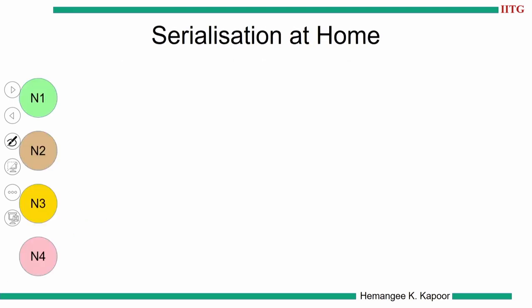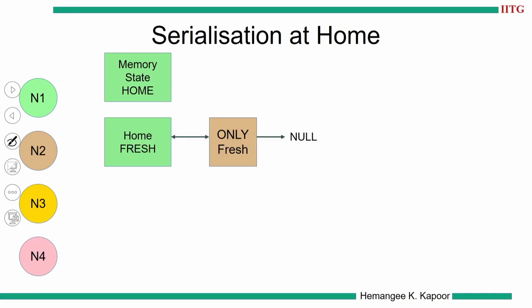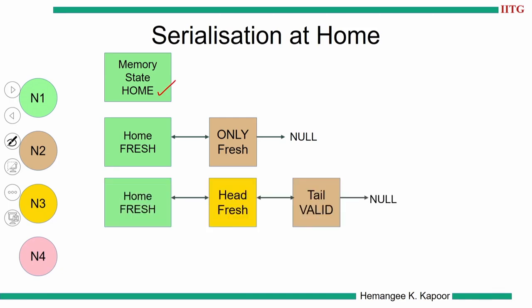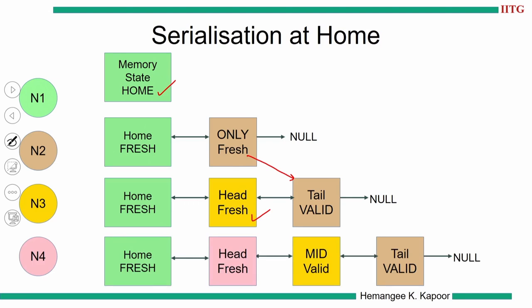For example, with four nodes in different colors — the green memory node is the home. When the brown node approaches, it becomes the single node in the system. When a third node comes, it shifts and gets added. The serialization order is: N2 (brown) got serviced first, then N3, then node 4 — this is the order of serialization because that is the order in which the home services those requests.